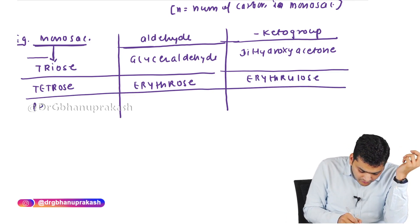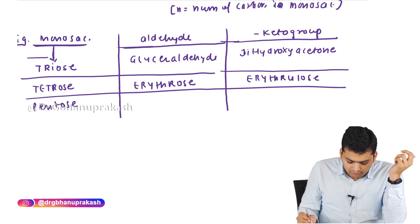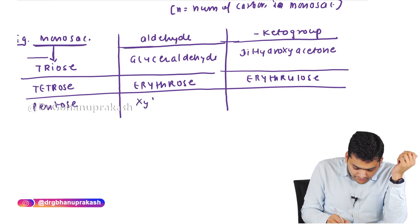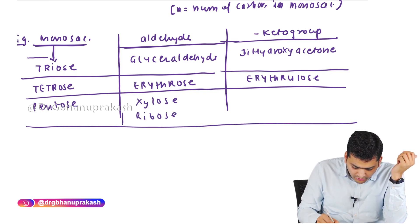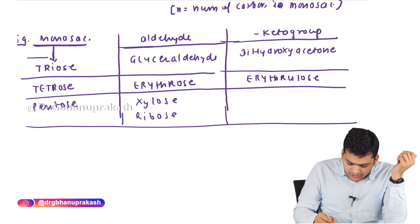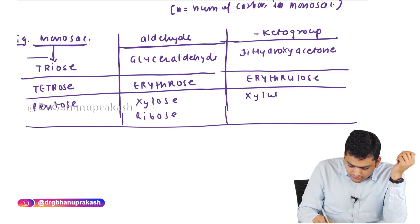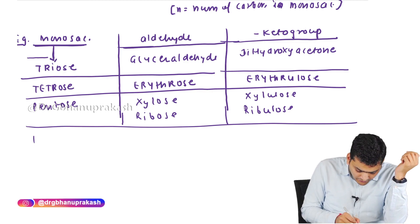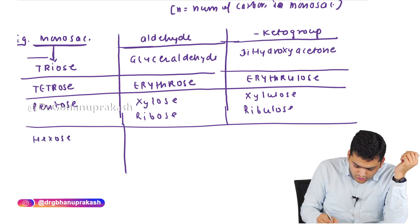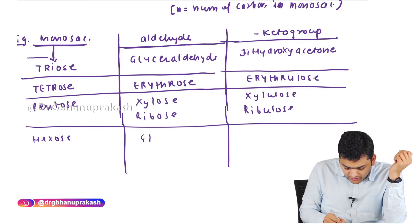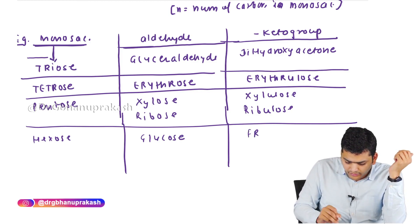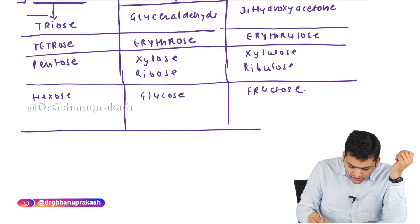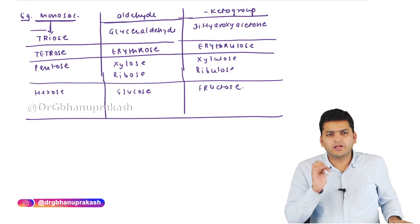For six-carbon monosaccharides (hexose): with the aldehyde group the most common one is glucose. With the keto group the molecule is called fructose. This is how the various types of monosaccharide are made — classified by carbon number and the functional group used.